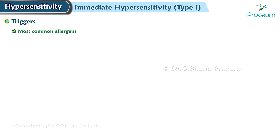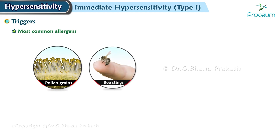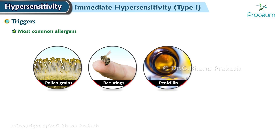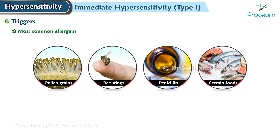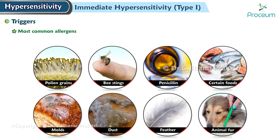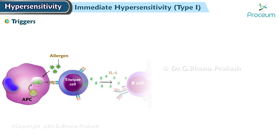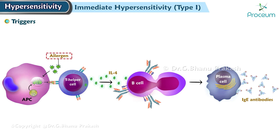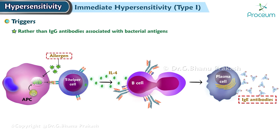The most common allergens that provoke immediate hypersensitivity are pollen grains, bee stings, penicillin, certain foods, molds, dust, feathers, and animal fur. For unclear reasons, these allergens bind to and elicit the synthesis of immunoglobulin E antibodies, rather than the immunoglobulin G antibodies associated with bacterial antigens.